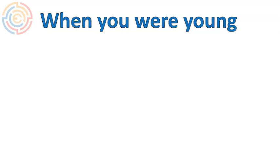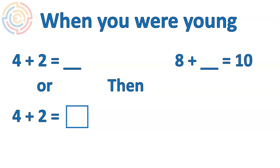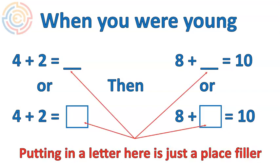First off, I want you to remember back to when you were young. When you were young, you would see a math expression written like this: four plus two equals blank. Or you might have seen it like this — four plus two equals a square, a box that you would write your answer in. Then as you progress, you'd get something like eight plus blank equals ten. These sentences are the basis for what we're going to talk about. Essentially what we do with these letters is we're sticking a letter in there — one reason why they use letters instead of blanks is just as a place filler.